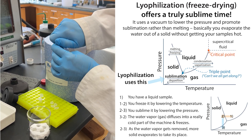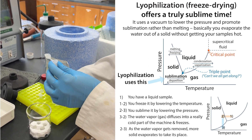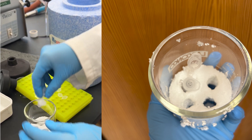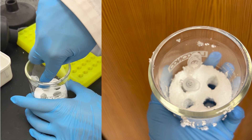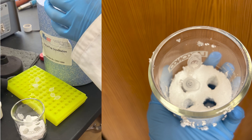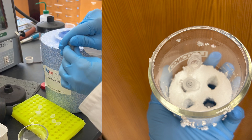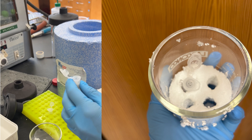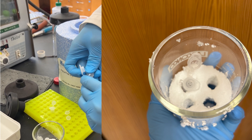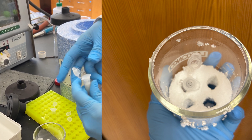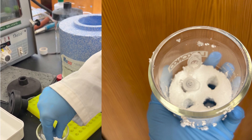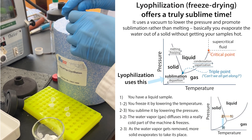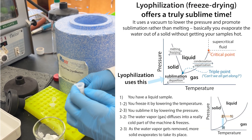So we open the lid of the frozen tube, stick on the cap with the holes, and stick it in the little styrofoam holder. We do this for all four. We want to make sure we have the hole cap so that the water vapor can escape once it sublimes off, but we keep the normal caps too because we'll use these tubes later.